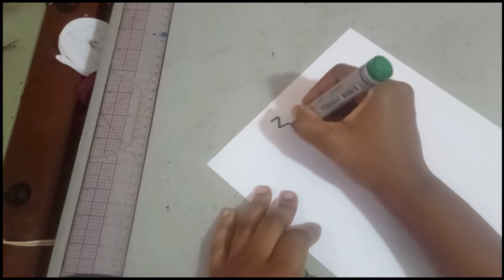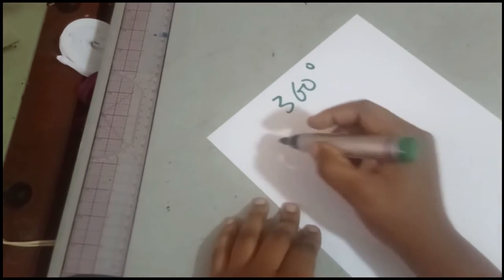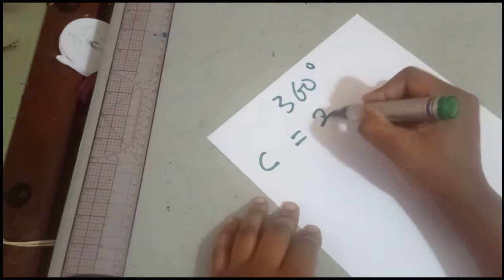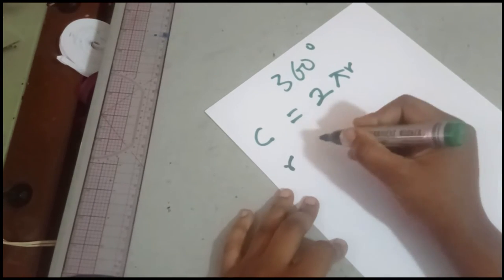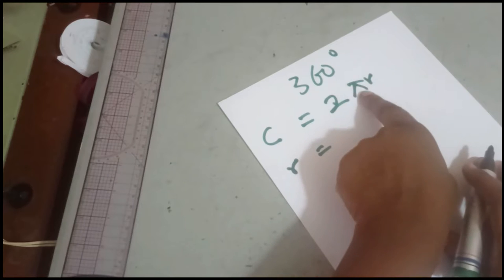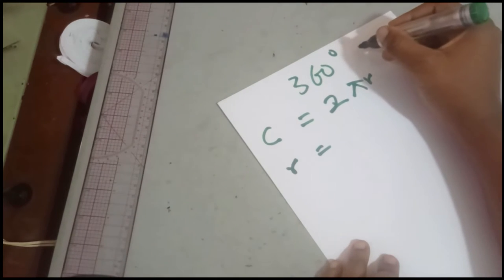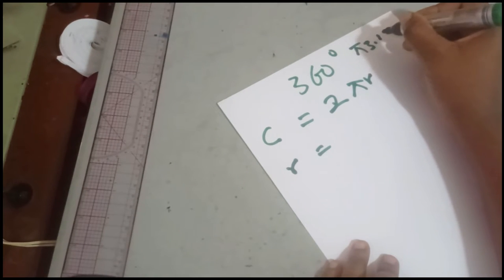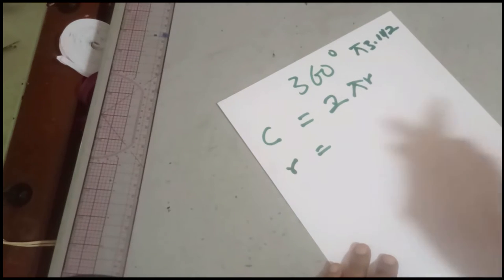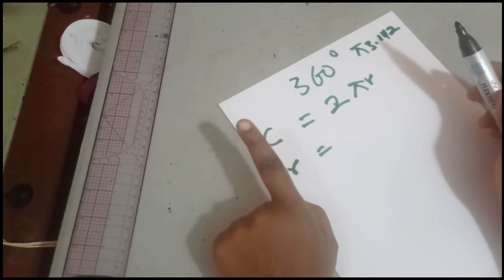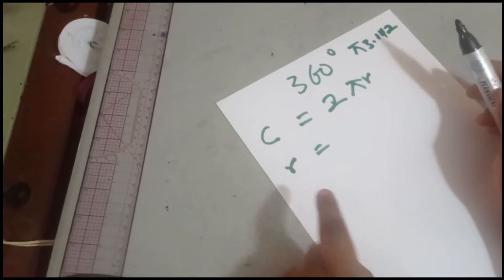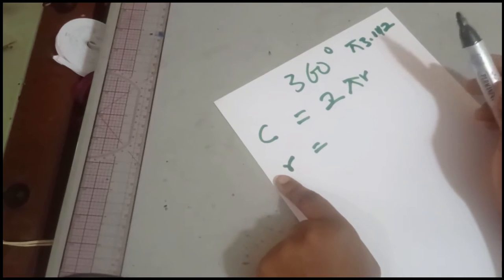So for a 360 degree flare, that is a full flare, the circumference is 2 pi r. Our pi is also known as 3.142 — it's a constant. So we know our pi and we know our circumference. Our circumference is the waist or where you want to place your flare. The value we don't know is our radius.